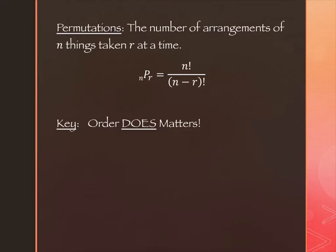The key difference between permutations and the next one called combinations is that the order matters. There are things in your life where the order matters — like it matters that you put your undergarments on before your outer garments. But maybe it doesn't matter whether you eat the meat first or the vegetable first. We saw examples selecting president, treasurer, and secretary — there the order matters because your job differs. But in committees, whether you're placed on the committee first or last doesn't matter.